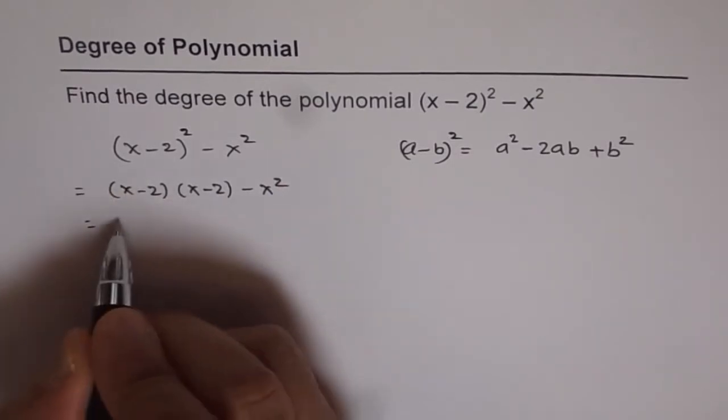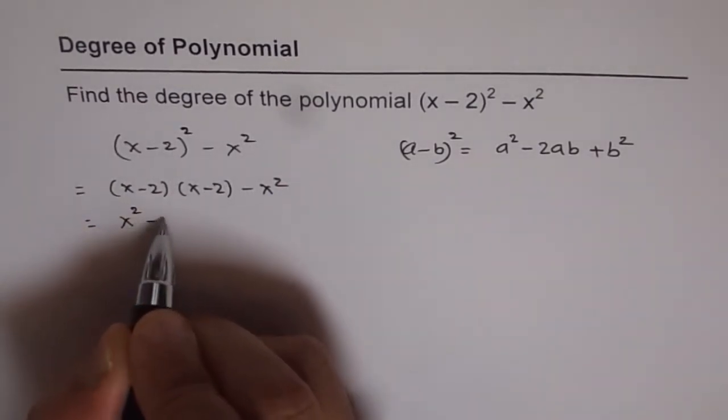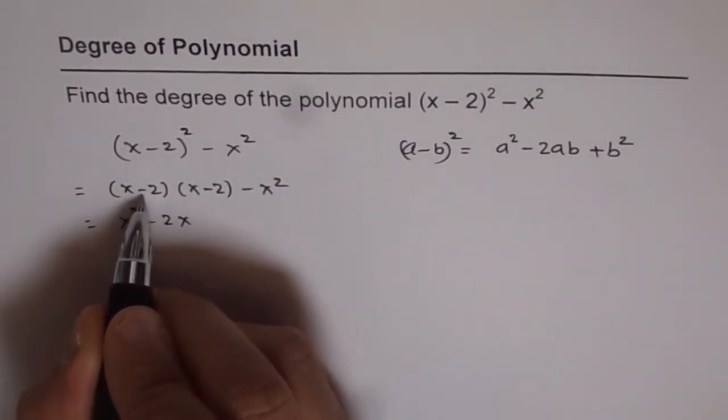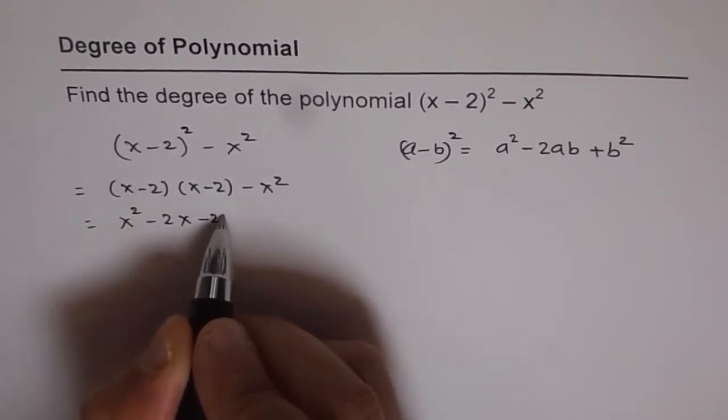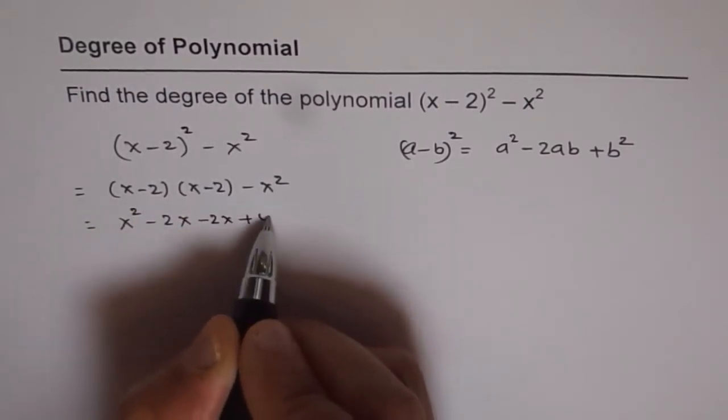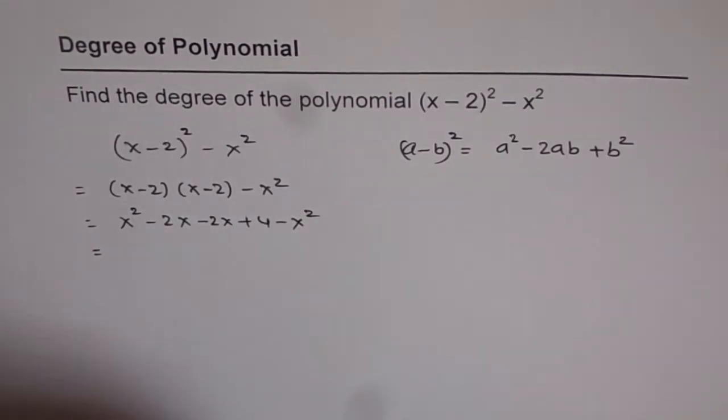there is a distributive property. So you get x² - 2x, and then you get -2x + 4 - x². And now see what happens.